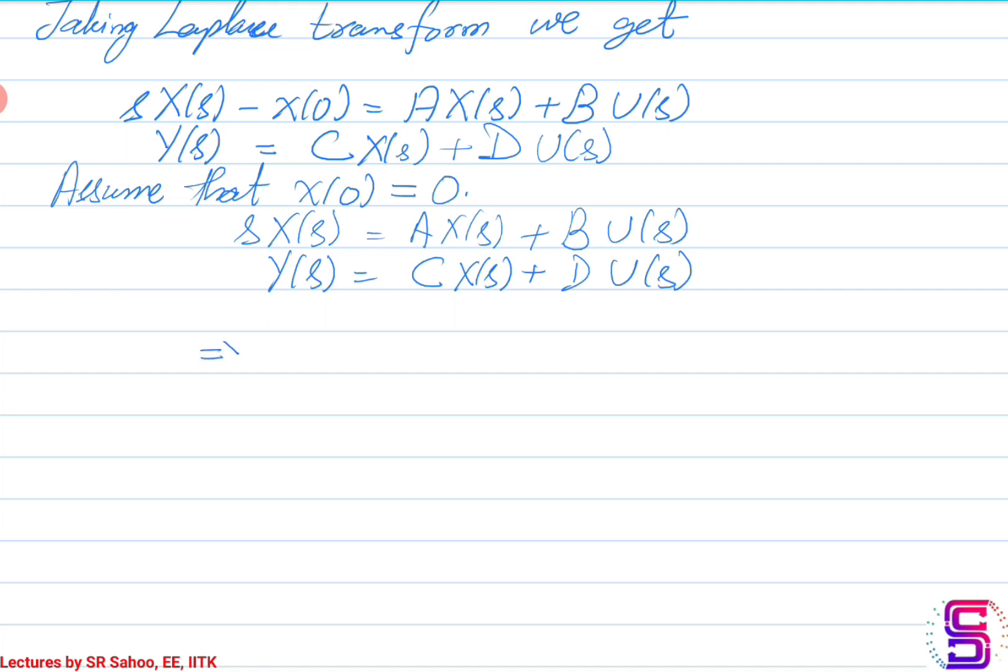From the first equation, I have (SI minus A) x(s) equals B u(s). So this gives me that x(s) is (SI minus A) inverse multiplied by B u(s).